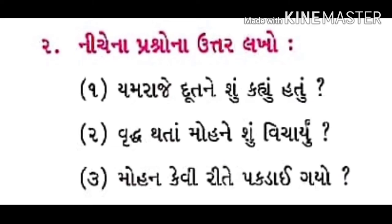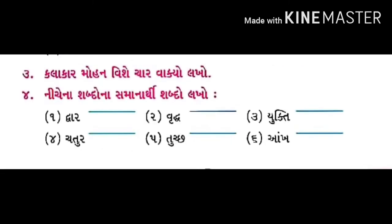નંબર બે: વૃદ્ધ મોહને શું વિચાર્યું હશે? — વૃદ્ધ મોહને વિચાર્યું કે હવે મૃત્યુ નજીક છે, માટે કોઈક એવું કાર્ય મારે કરી જવું જોઈએ જેથી મને લોકો વર્ષો સુધી યાદ રાખે. નંબર ત્રણ: મોહન કેવી રીતે પકડાઈ ગયો? — મોહને એટલી આબેહૂબ મૂર્તીઓ બનાવી કે તે જીવંત જ લાગતી હતી.